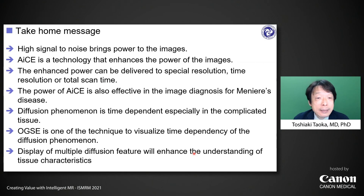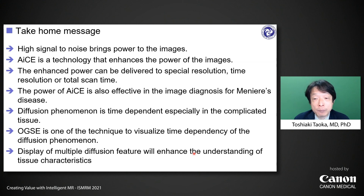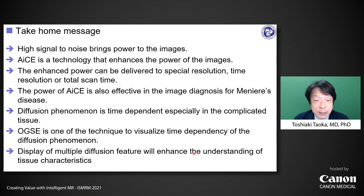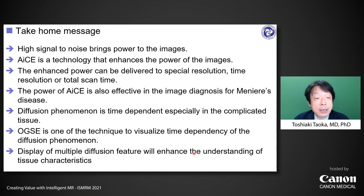In conclusion, high signal-to-noise brings power to images. AICE is a technology that enhances the power of images. The enhanced power can be delivered to spatial resolution, time resolution, or total scan time. The power of AICE is also effective in image diagnosis for Meniere's disease. Diffusion phenomenon is time-dependent, especially in complicated tissue. OGSE is one of the techniques to visualize the time dependency of diffusion. Display of multiple diffusion features will enhance the understanding of tissue characteristics.